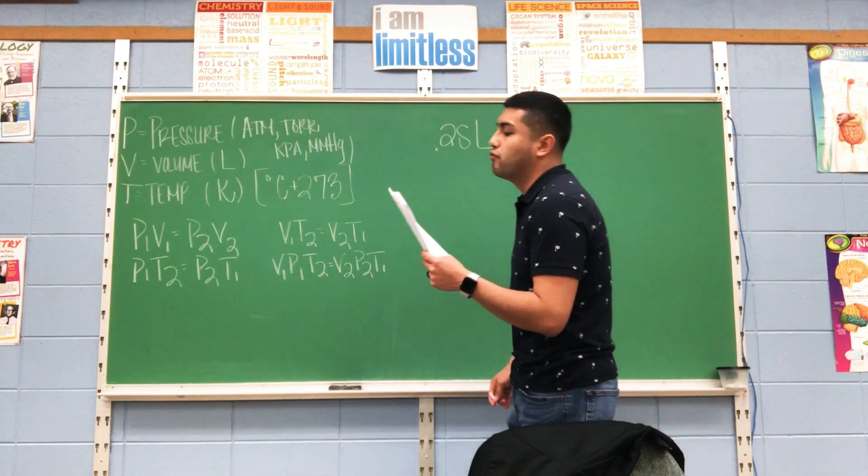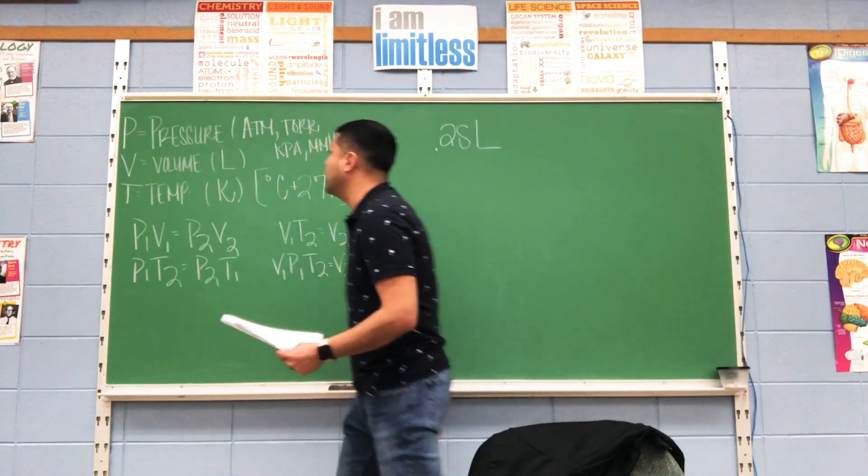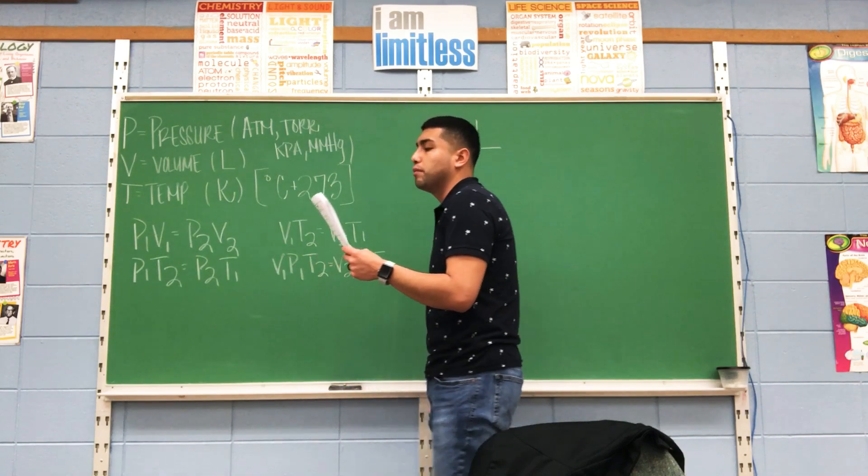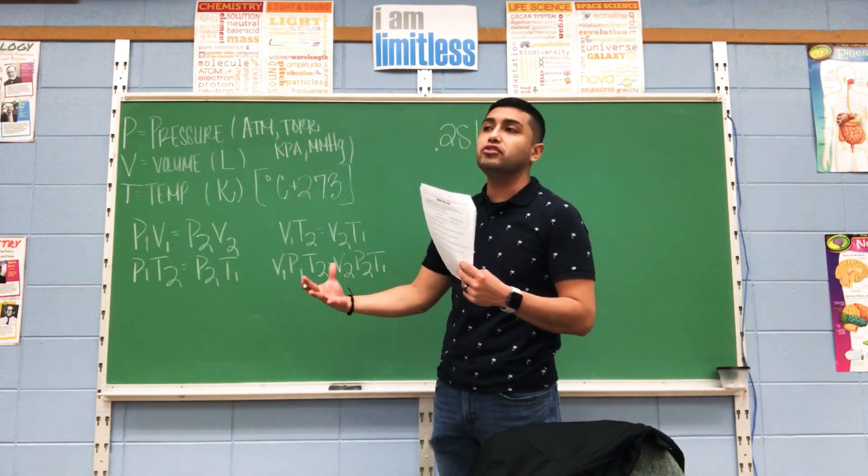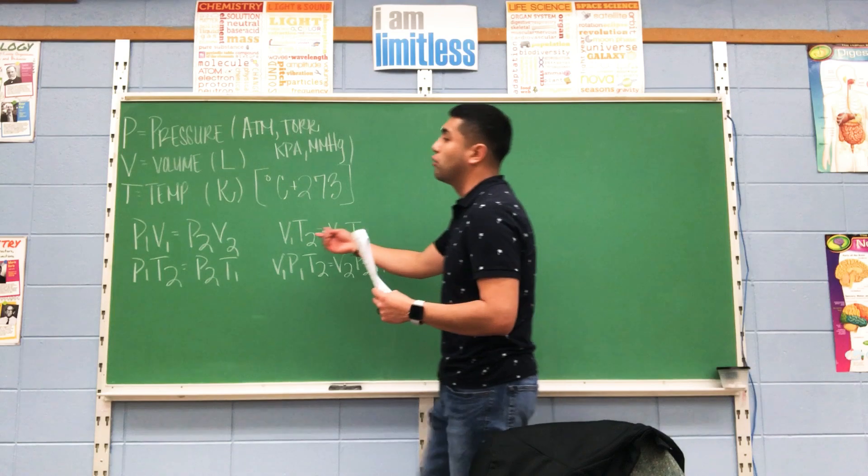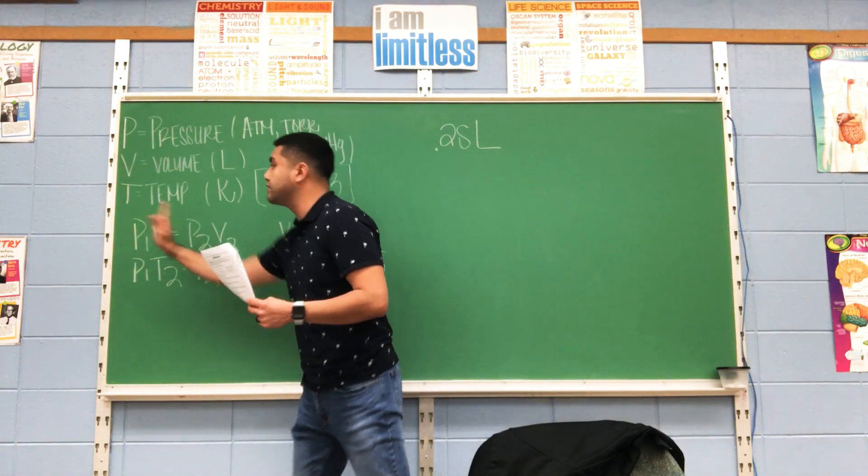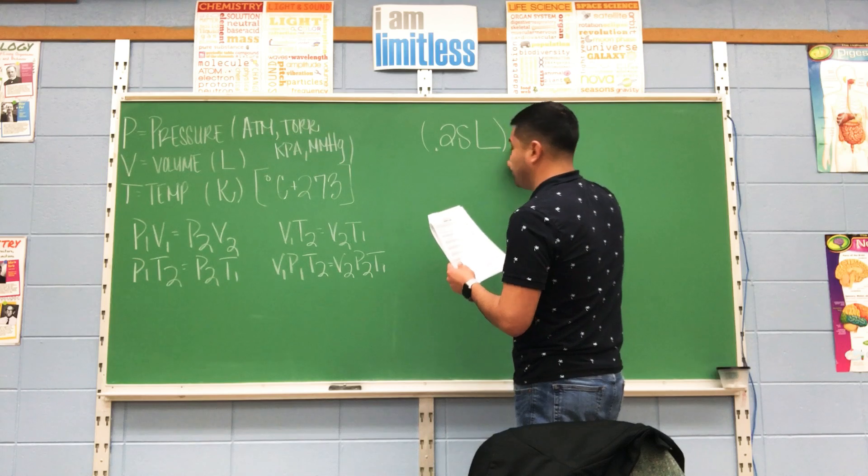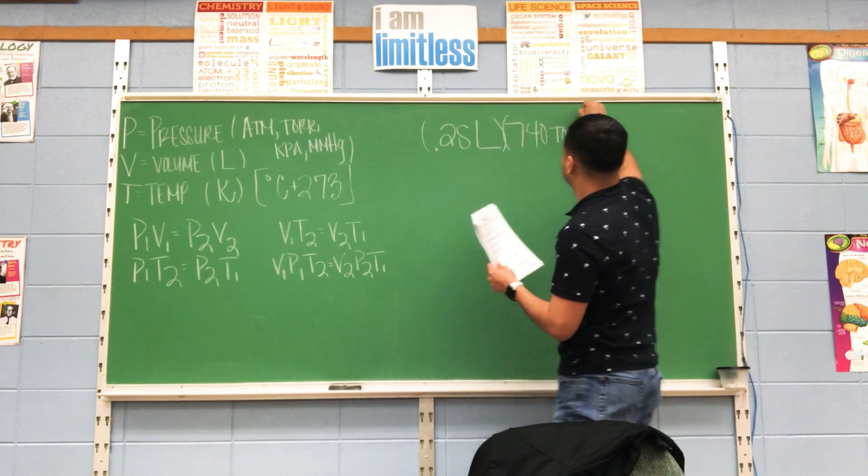I'm going to read the rest of the problem to figure out which formula I'm going to use. It mentions 740 tors. You may not be fully familiar with what a tor is, but you do know that it is a unit of pressure. So I do have my volume and my pressure. It says, what volume will it occupy at 800 tor pressure? Notice how temperature is not mentioned at all. Therefore, it is essentially irrelevant. So because you're not using temperature, you're going to reference your first formula, Boyle's law, on pressure and volume.